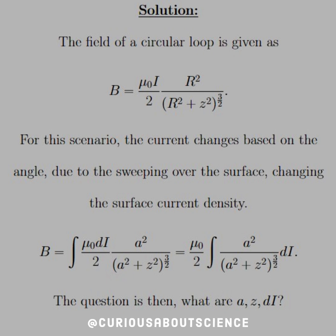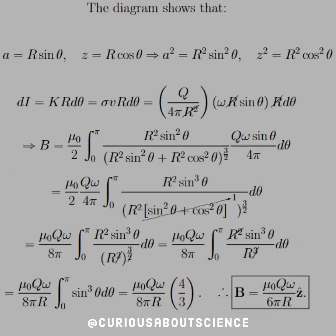Now we need to define what A, Z, and dI are. From the diagram, we can tell that A is equal to R sine theta, Z is equal to R cosine theta. And if we square them respectively, we get those results.